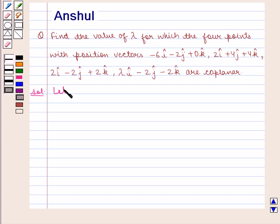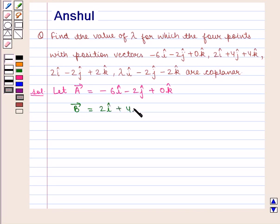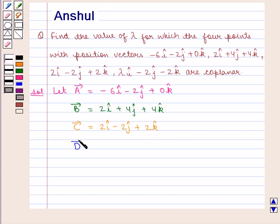Let position vector of A be given by minus 6i minus 2j plus 0k. Position vector of B is given by 2i plus 4j plus 4k. Position vector of C is given by 2i minus 2j plus 2k. And position vector of D is given by lambda i minus 2j minus 2k.